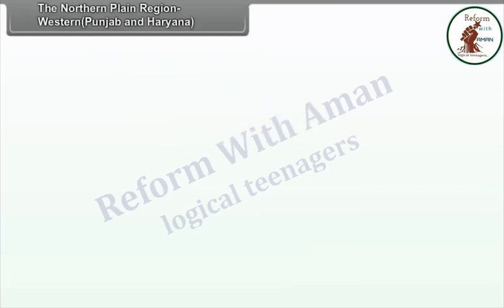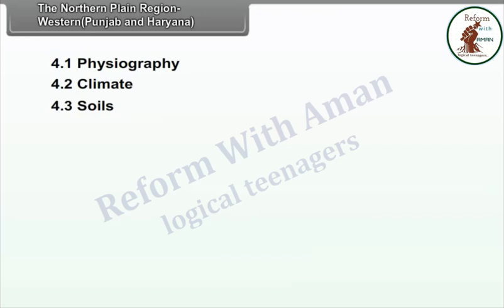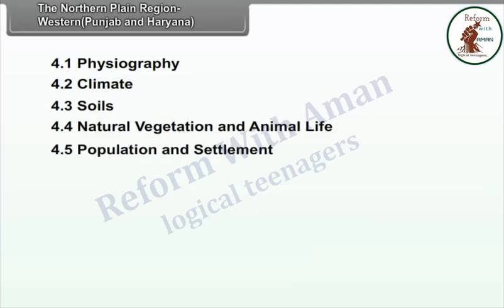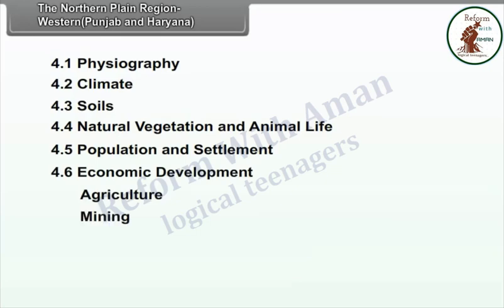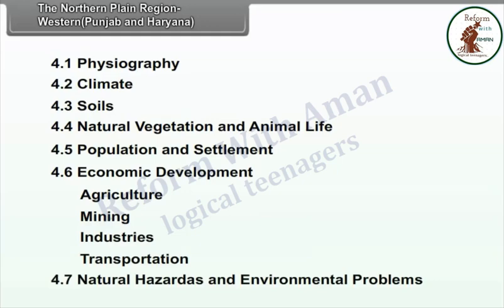Chapter 4: The Northern Plain Region - Western Punjab and Haryana. We will study the following points in this chapter: Physiography, Climate, Soils, Natural Vegetation and Animal Life, Population and Settlement, Economic Development which includes Agriculture, Mining, Industries, Transportation, Natural Hazards and Environmental Problems.